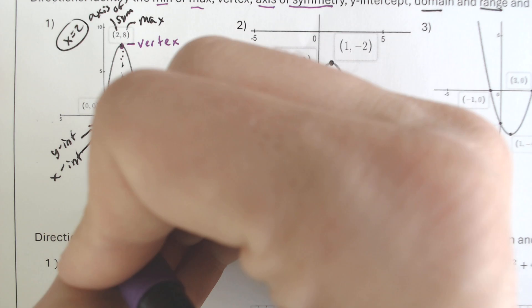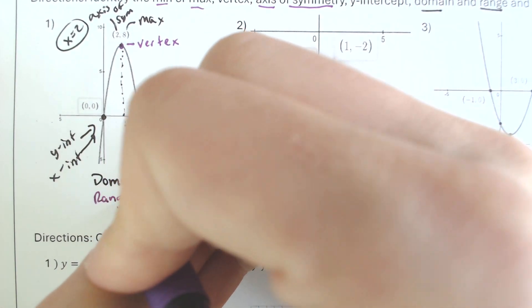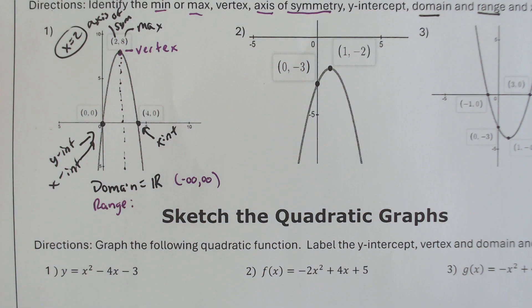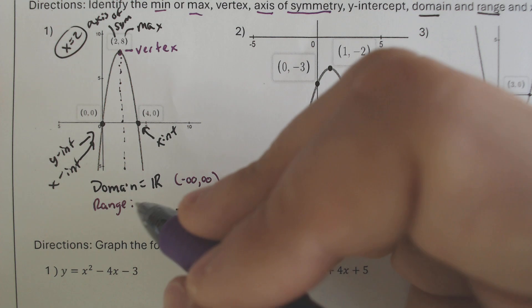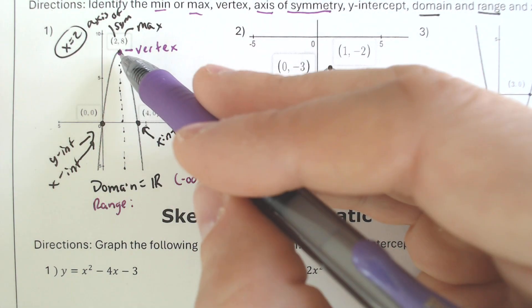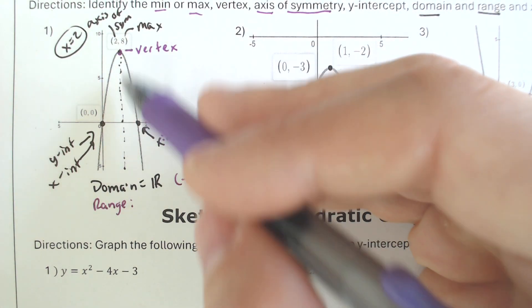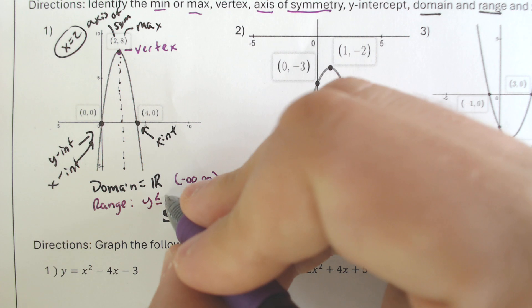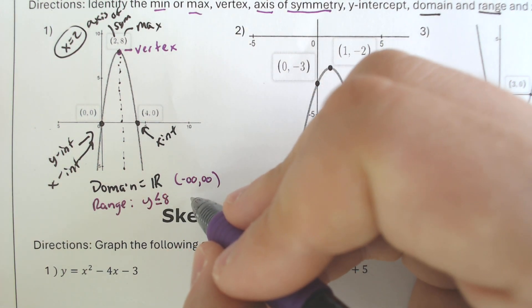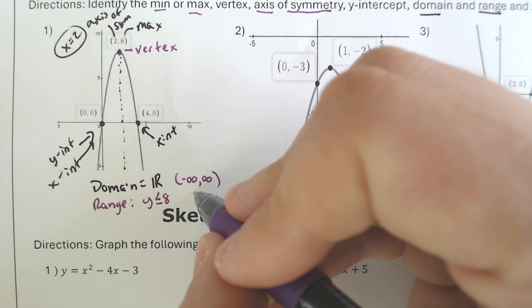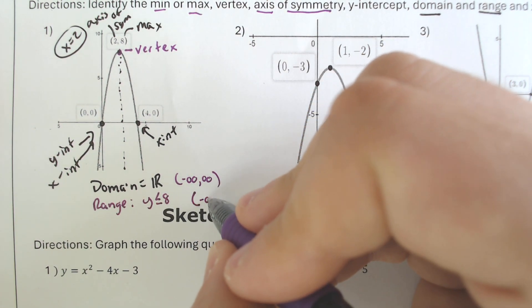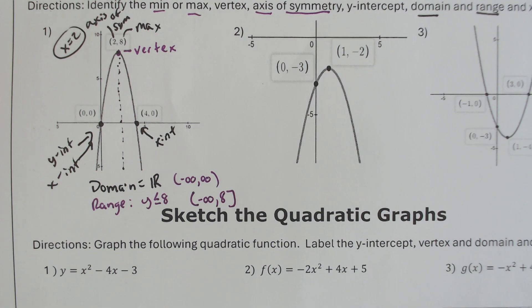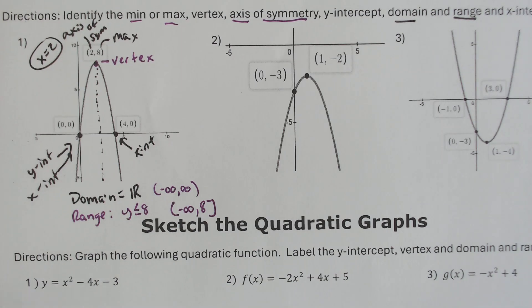The range is going to be dictated by that maximum value or that minimum value. It is going up to 8, and it's going to have all the numbers smaller than that, so it's going to be y is less than or equal to 8. Or you could say from negative infinity up until positive 8, and you would need the bracket around the 8.